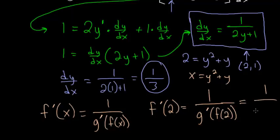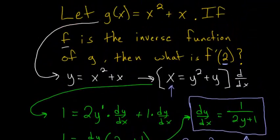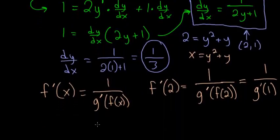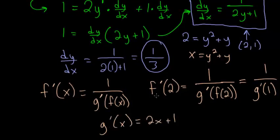Essentially we have 1 over g prime of 1. We just need to figure out the derivative of g and evaluate it at 1. Our g of x is x squared plus x. The derivative of x squared plus x is 2x plus 1. We can evaluate this at an x value of 1 and we get 2 times 1 plus 1, which is 3. So again, we find that this derivative of the inverse evaluated at 2 is 1 over 3.